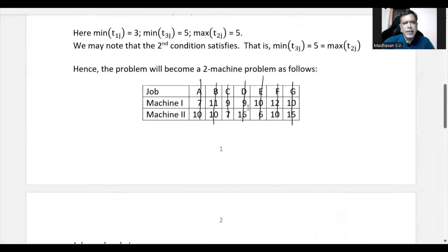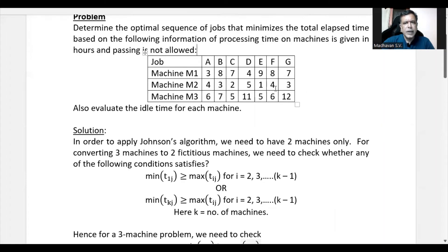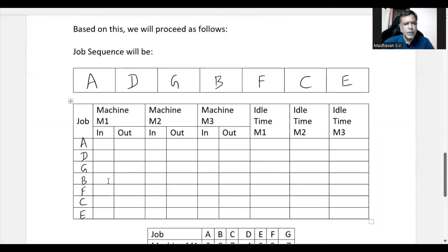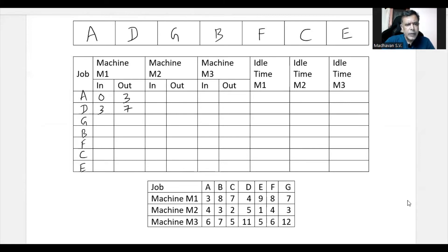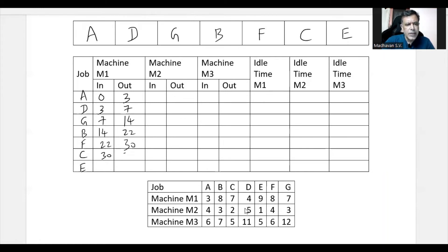Now we compute in-time and out-time for each job in machine sequence order. For machine one: A starts at 0, out at 3; D starts at 3, out at 7; G starts at 7, out at 14; B starts at 14, out at 22; F starts at 22, out at 30; C starts at 30, out at 37; E starts at 37, out at 46.